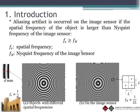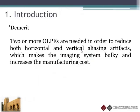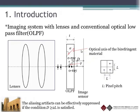If we take a picture of this, the aliasing artifact will look like this. So what is the conventional way to reduce such aliasing artifact? Here it shows an imaging system with lenses and the optical low pass filter. Here are the lenses and here is the optical low pass filter.